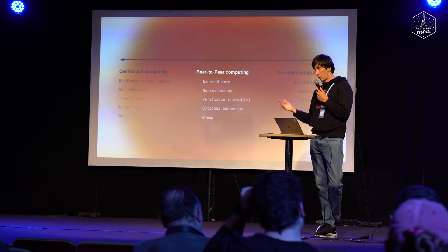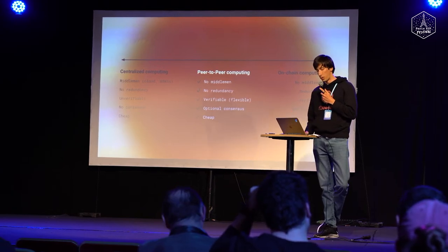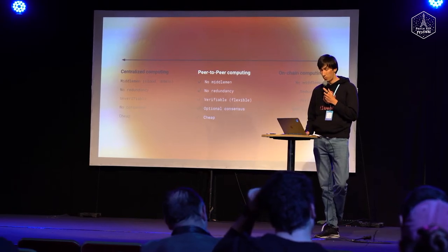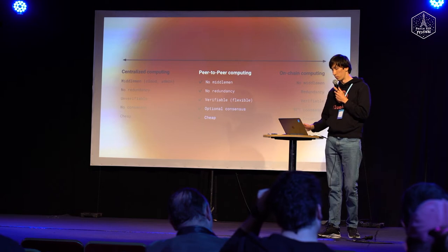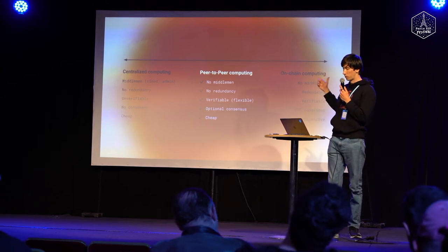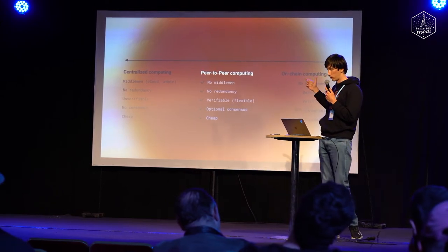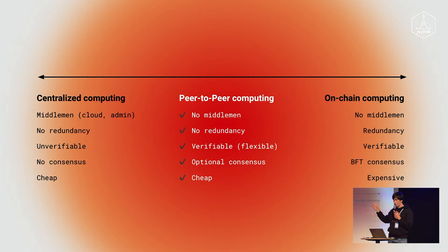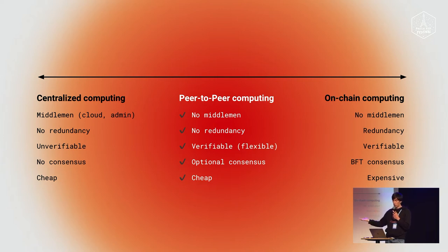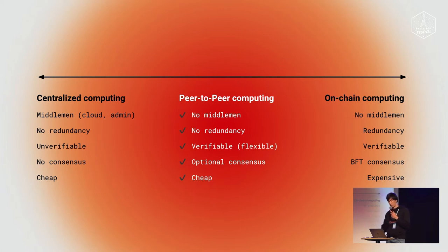This is how we envision peer-to-peer computing. It basically sits somewhere between on-chain and centralized computing. There's no middleman, no redundancy. Computations are optionally verifiable, and it's obviously cheaper than on-chain. So it gives you a lot of flexibility.